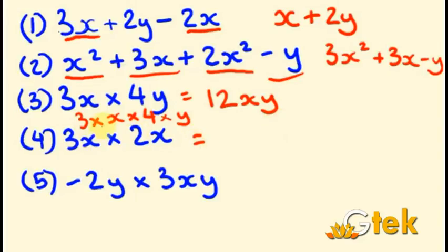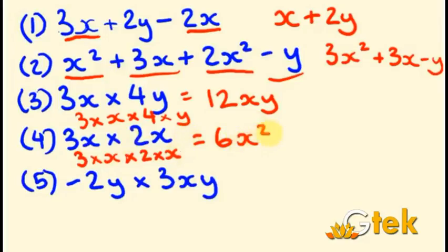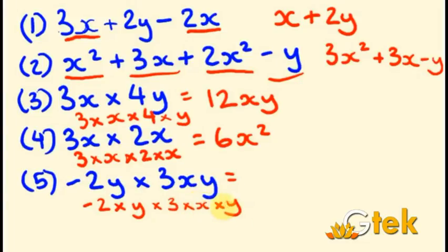Fourth equation: 3X into 2X — both are X components. Expanding: 3 times X into 2 times X. So 3 into 2 is 6, and X into X is X squared. Result: 6X squared. Fifth equation: minus 2Y into 3XY. Expanding: minus 2 times Y into 3 times XY. Multiplying numbers: minus 2 into 3 is minus 6. Y appears twice, so Y squared. Result: minus 6XY squared.